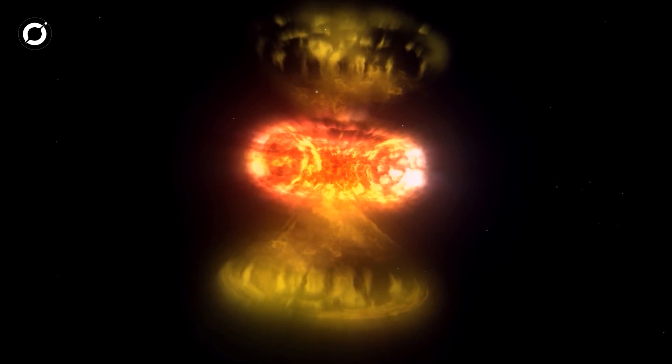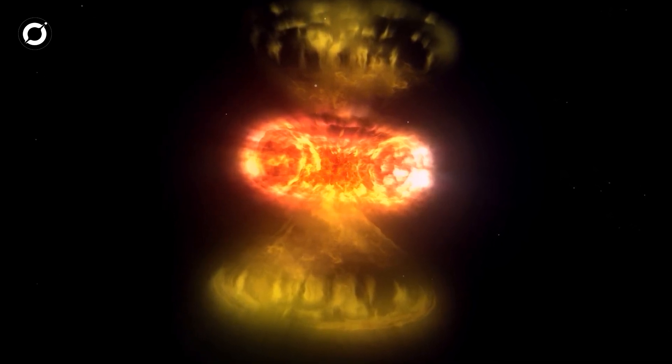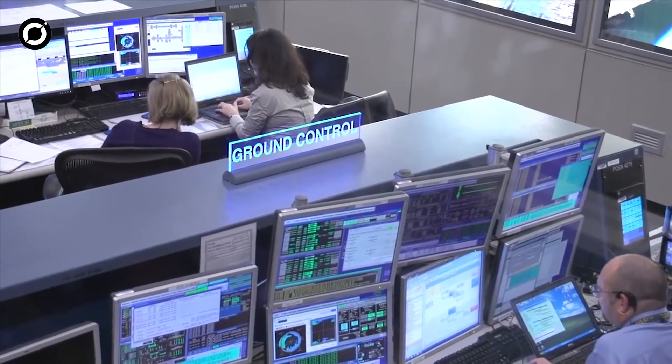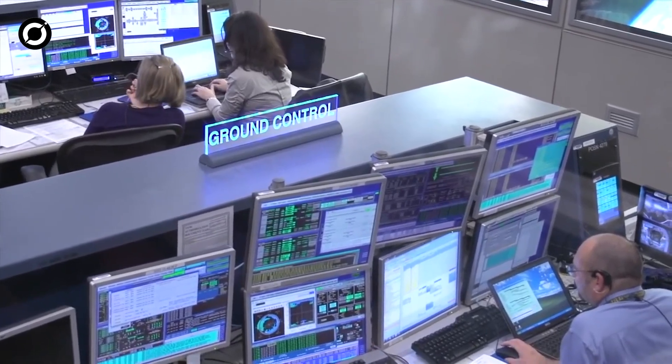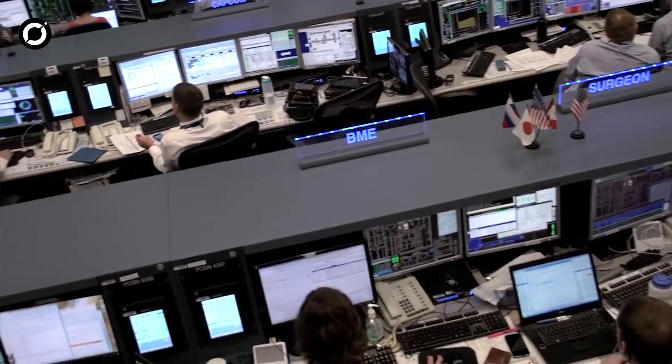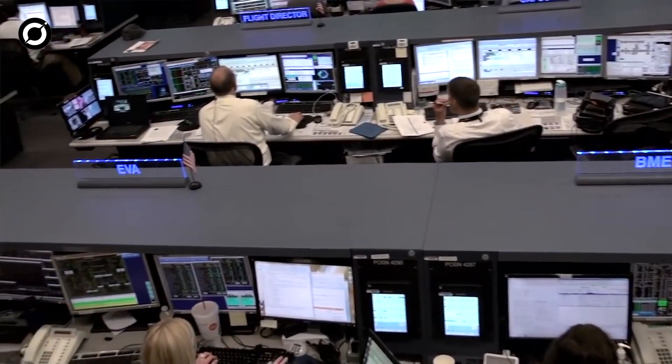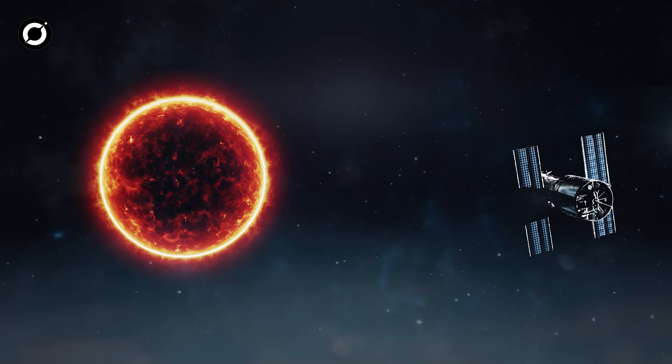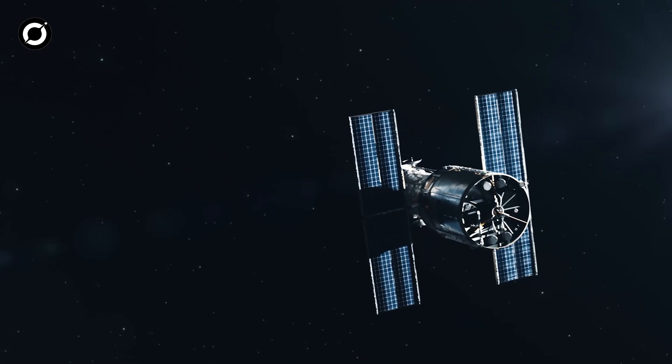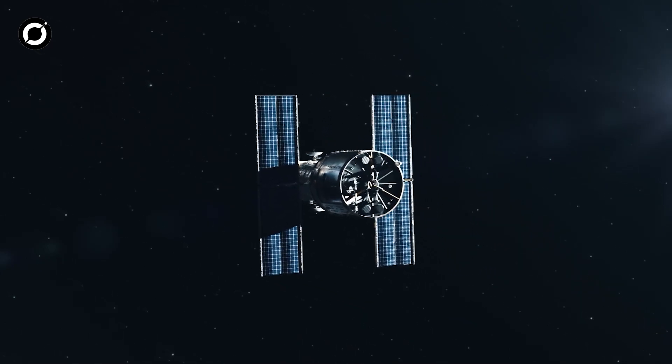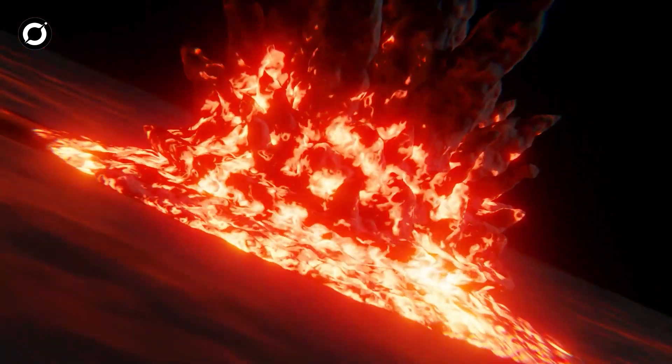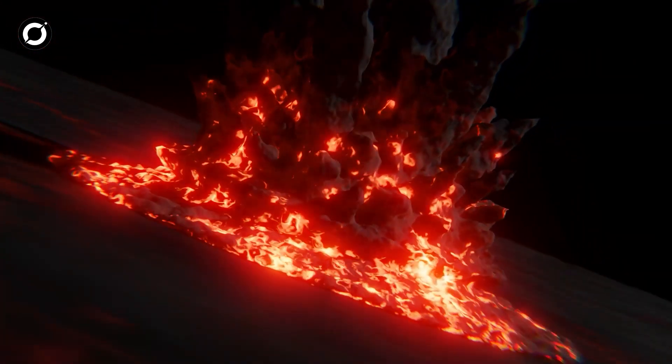In late 2019 and early 2020, the star underwent an unprecedented dimming event, losing a significant portion of its brightness. This sparked speculation and curiosity among scientists worldwide. Several theories emerged to explain Betelgeuse's dimming, but one possibility stood out and was later found to be correct by the Hubble Space Telescope. Analyzing data from NASA's Hubble Space Telescope and several other observatories, astronomers had concluded that Betelgeuse quite literally blew its top in 2019, losing a substantial part of its visible surface.